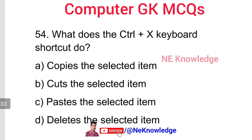Question number 54: What does the Ctrl+X keyboard shortcut do? Ctrl+X cuts the selected item. Option number B is the correct answer. To summarize: Ctrl+C is copy, Ctrl+V is paste, Ctrl+X is cut, and Ctrl+A is select all.